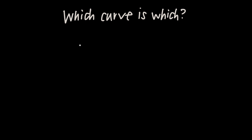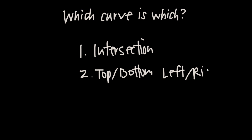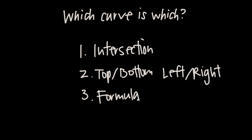Whenever you have an area between curves problem there are really three parts to it. The first part is finding any points of intersection where the two curves meet. The second part is the orientation of the curves — which is on the top and which is on the bottom, or which is on the left and which is on the right. The third part is plugging everything into the area between curves integral formula and then evaluating that integral.